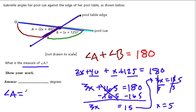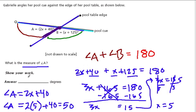A. So A equals 2x plus 40. And x is 5. So A equals 2. The measure of angle A equals 2 times 5, which is x plus 40. 2 times 5 is 10 plus 40. 10 plus 40 is 50 degrees. So angle A is 50 degrees.